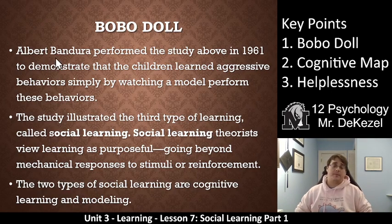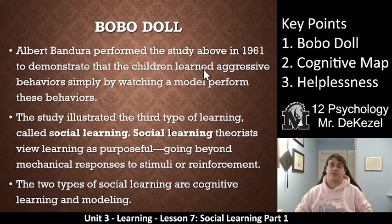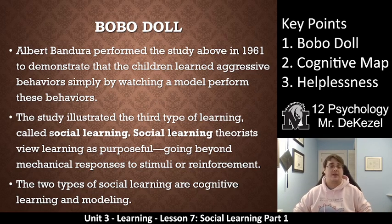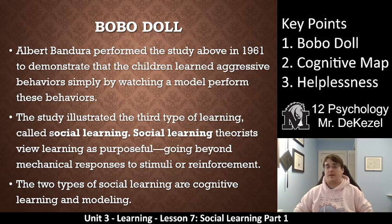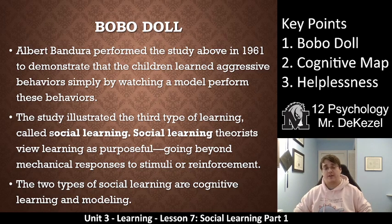Albert Bandura performed this experiment in 1961 to demonstrate that children learned aggressive behavior simply by watching a model perform it. This study illustrated the third type of learning we're going to talk about: social learning. Social learning theorists viewed learning as purposeful, going beyond mechanical responses to stimuli or reinforcements — like a mother lion teaching her cubs by showing them, or a bird showing its young how to fly. There are two types of social learning: cognitive learning, which we focus on today, and modeling, which is the next lesson.